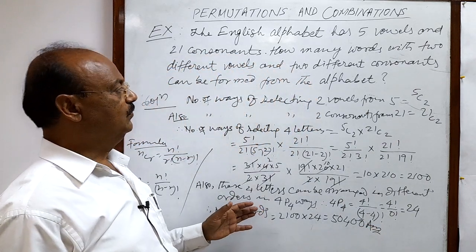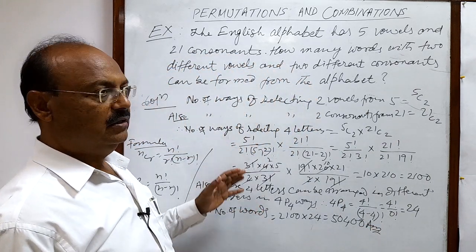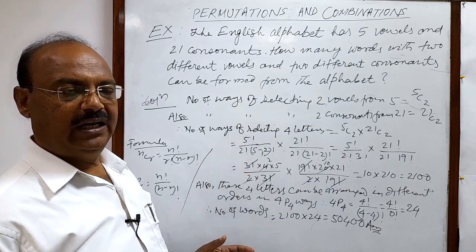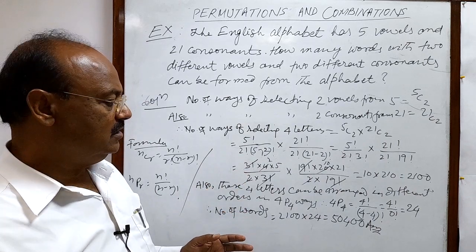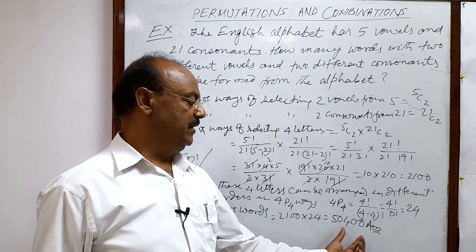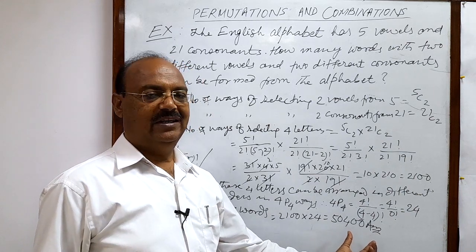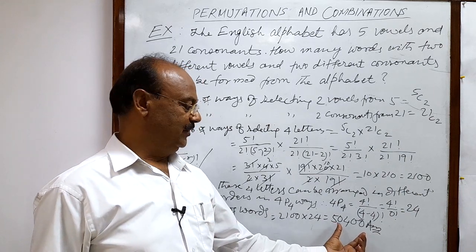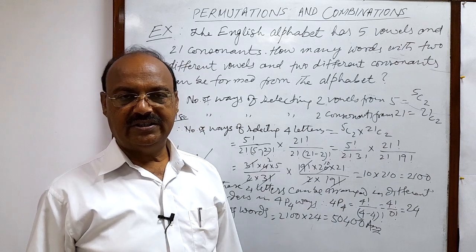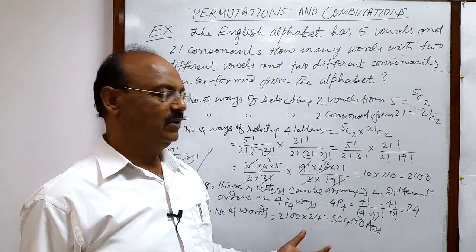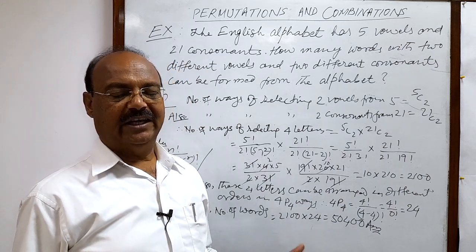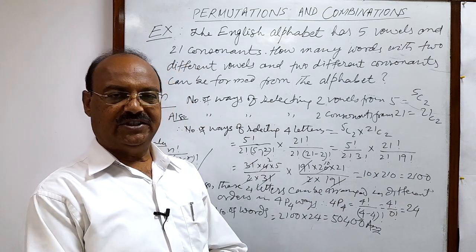So the question is very interesting. We can form 50400 words with or without meaning using 2 vowels and 2 consonants from the English alphabet. I hope you have understood it well, and we will do more questions in other videos. Thank you very much for watching.